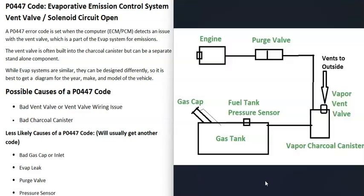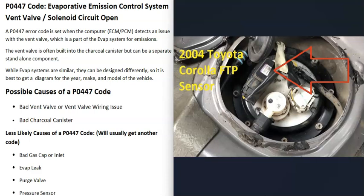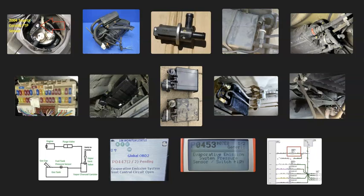Another possible cause is some other problem inside the system that's stopping the vent valve from working correctly — another component has gone bad so the computer thinks the vent valve isn't working, but it actually is. This could be a bad gas cap, an EVAP leak, a faulty purge valve, or the fuel tank pressure sensor giving the computer bad information. Usually when one of these other components goes bad, you'll also get another code. For example, a P0453 code — evaporative emission system pressure sensor switch high — would indicate going to check that fuel tank pressure sensor. Pay attention to any additional codes.